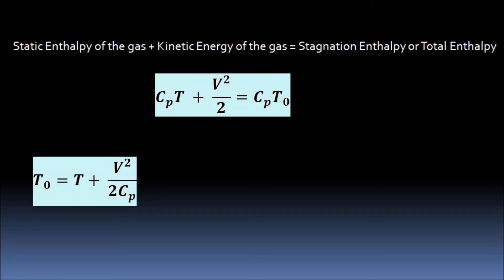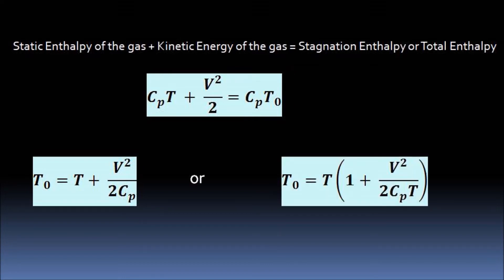After dividing both sides by CP, we get an expression for T₀. This expression can be further simplified by taking T common from the right-hand side.